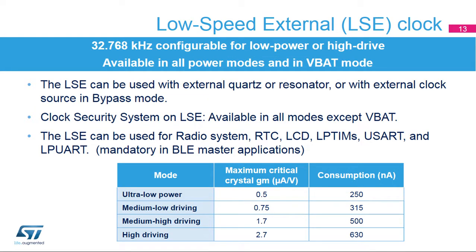The 32.768 kHz low-speed external oscillator, or LSE, can be used with an external quartz or resonator, or with an external clock source in bypass mode. The oscillator driving capability is programmable with four modes available, from ultra-low power mode with a consumption of only 250 nA to high driving mode. A clock security system monitors LSE failure; in case of failure, the application can switch from the RTC clock to the selected LSI clock. The clock security system is functional in all modes except VBAT, and also under reset. The LSE can be used to clock the radio system, the RTC, the LCD, low-power timers, the USART, and low-power UART peripherals.